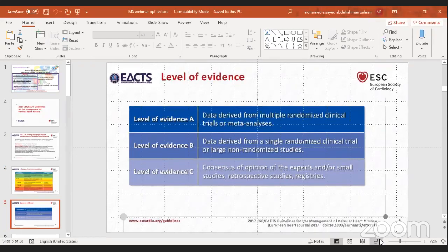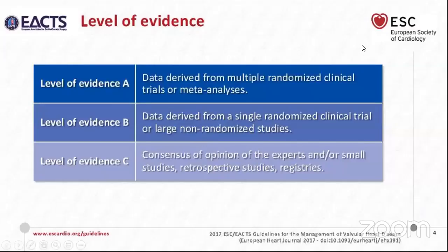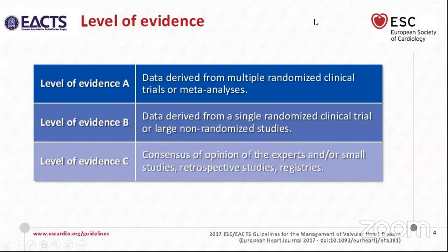It seems we got disconnected at the level of evidence section. The level of evidence A is data derived from multiple randomized clinical trials or meta-analysis. Level of evidence B is data derived from a single randomized trial or multiple non-randomized studies. Level of evidence C is derived from a consensus of opinion or a small number of retrospective studies or registry.